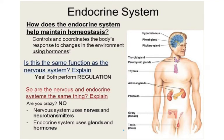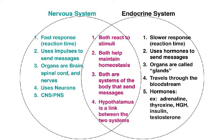How does the endocrine system help maintain homeostasis? Homeostasis is the maintenance of a constant internal environment — maintaining temperature, blood glucose level, and water content of blood. The endocrine system controls and coordinates the body's response to changes using hormones. The nervous system performs a similar regulatory role, but they are not the same thing. The nervous system uses nerves and neurotransmitters; the endocrine system uses glands and hormones.